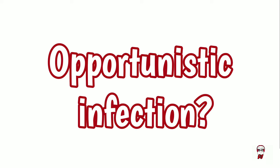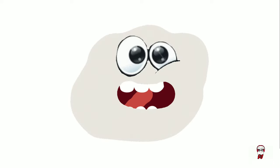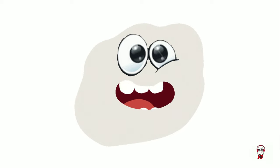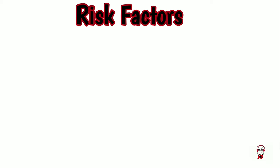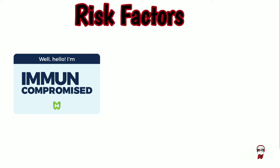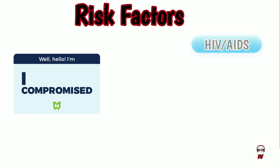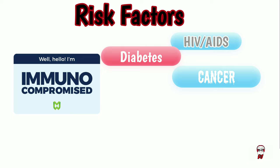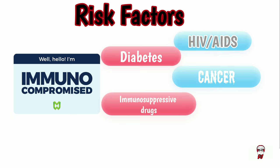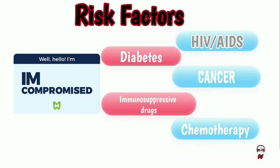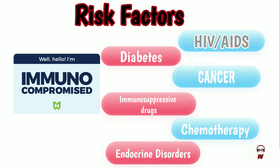But that's not all. I am an opportunistic infection. I take advantage of the diseased and the weak — I just thrive in these patients. I'm very commonly present in patients with immunosuppressive diseases such as HIV, diabetes, or cancer. People undergoing immunosuppressive drugs, chemotherapy, and even patients with endocrine disorders.